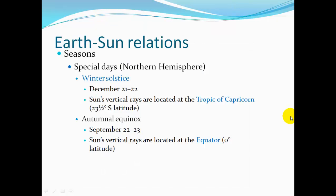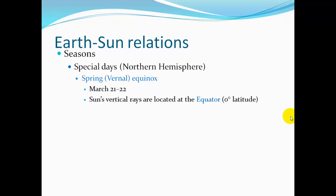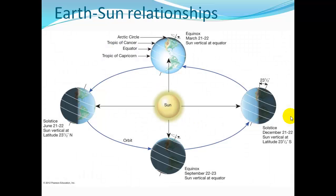The winter solstice is December 21st–22nd. The sun's vertical rays are located at the Tropic of Capricorn, 23.5 degrees south latitude. The autumnal equinox is September 22nd–23rd, when the sun's vertical rays are located at the equator, or zero degrees latitude. The spring or vernal equinox is March 21st–22nd, when the sun's vertical rays are also located at the equator.